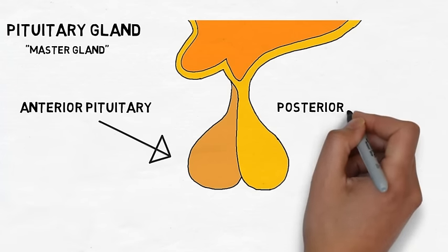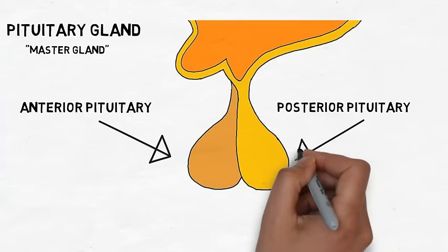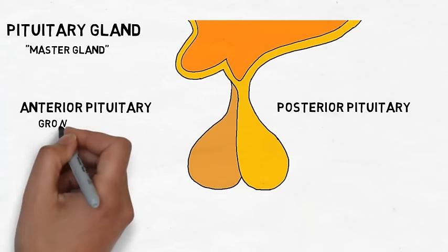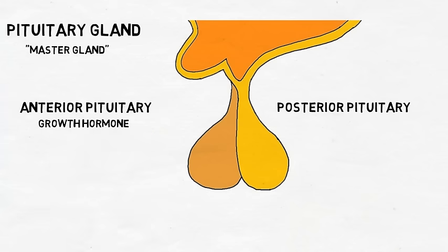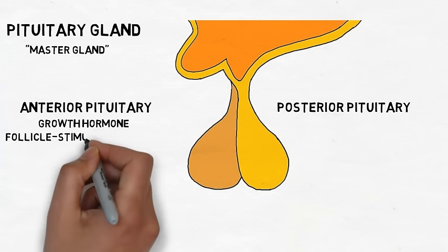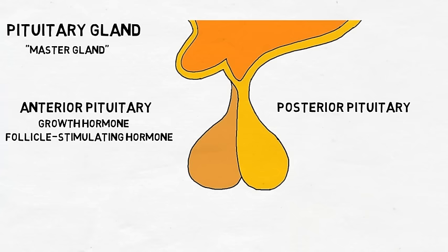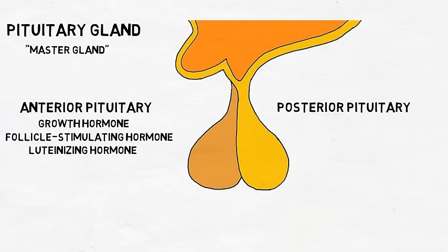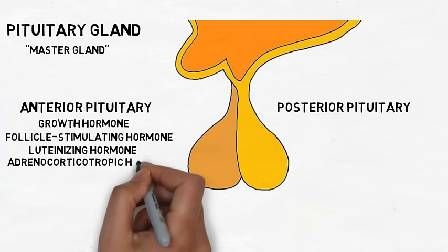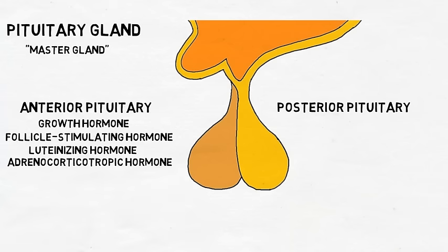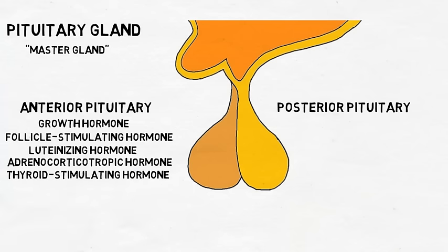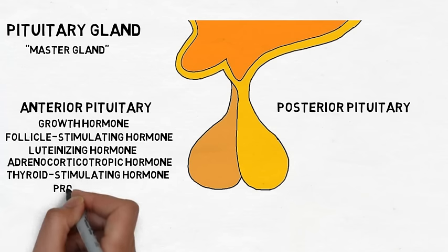The anterior pituitary is responsible for the release of a number of hormones that have widespread effects throughout the body. They include growth hormone, which is involved with growth; follicle-stimulating hormone, which plays a role in development and reproduction; luteinizing hormone, which is essential to testosterone production and reproduction; adrenocorticotropic hormone, which is involved with the stress and fear responses; thyroid-stimulating hormone, which is important to healthy metabolism; and prolactin, which promotes milk production in females.